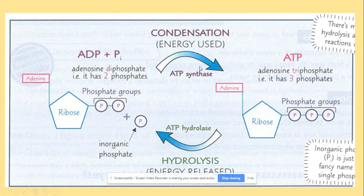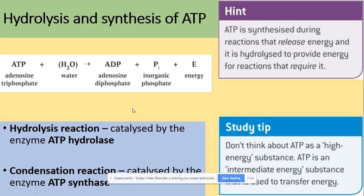For the condensation reaction you are using energy because you are creating a bond, but for hydrolysis energy is released because energy is stored between the bonds of the inorganic phosphate. The enzyme used for hydrolysis is ATP hydrolase, and for condensation it is ATP synthase. The hydrolysis reaction requires water to break the bond, whereas condensation involves the removal of a water molecule.